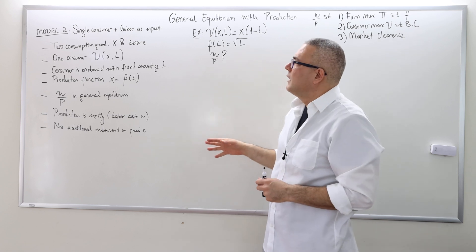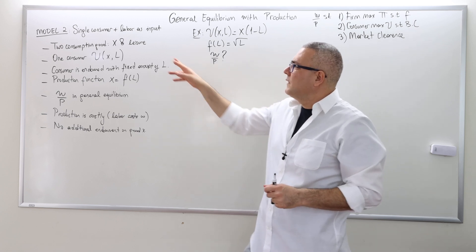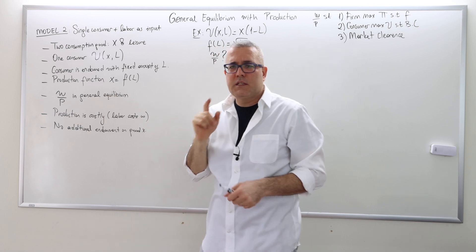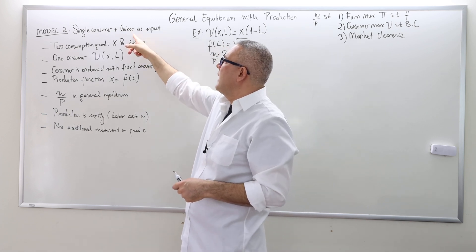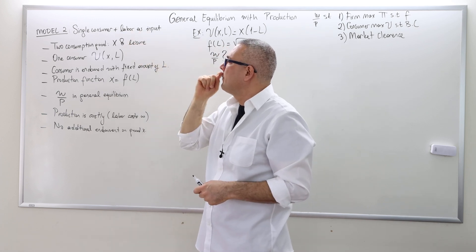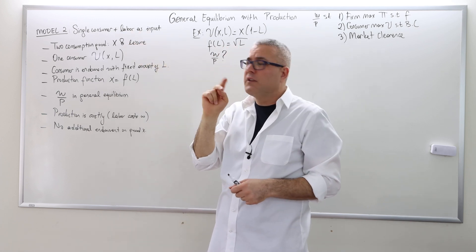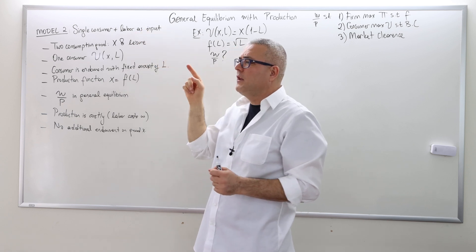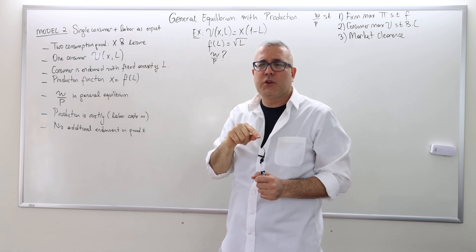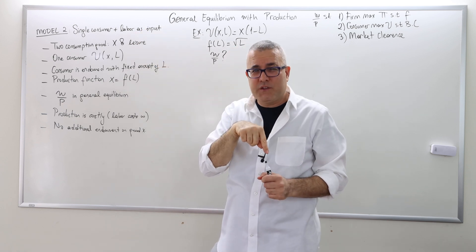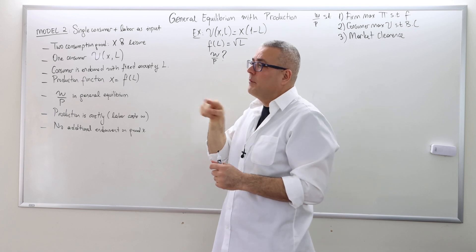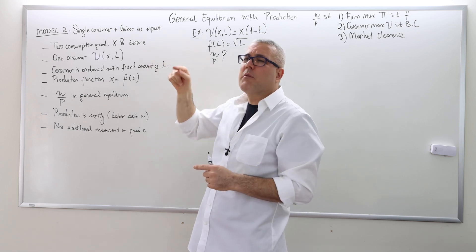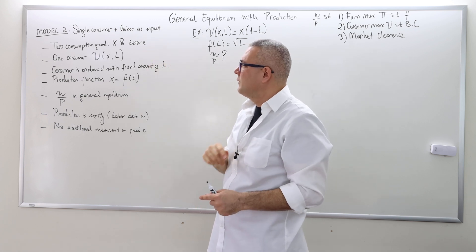Here is the second model. In this model, we have still a single consumer and then two consumption goods. But this time, one of the consumption goods is related to the input itself. The labor is the input.